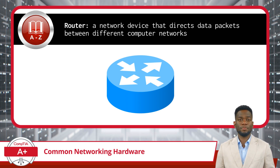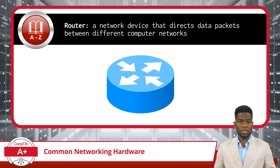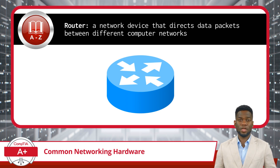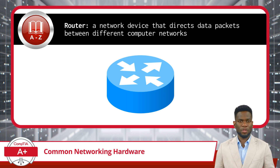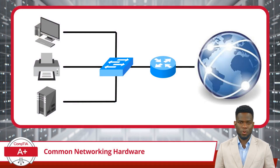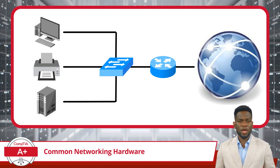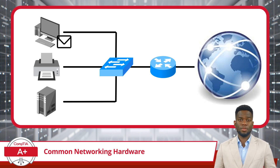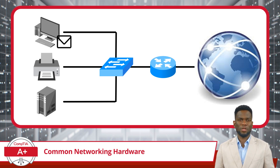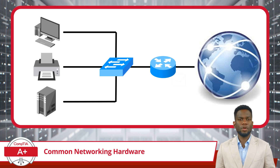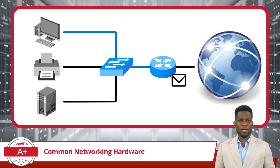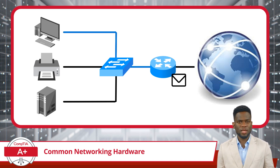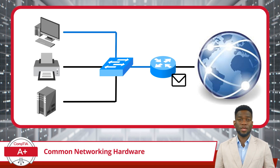We also have network routers. A network router is a network device that directs data packets between different computer networks. This is similar to a switch, with the exception that a switch directs traffic within a local area network, while a router controls data packets entering or leaving a local area network. When a device wants to send data to another device in a different network, it compiles a data packet containing a source IP address and a destination IP address. If the destination IP address is not located within the current network, the packet seeks out the router. The router examines the packet's destination address, much like reading a street sign, and determines the most efficient path for the data. In summary, a router is a gateway sitting at the edge of a network's broadcast domain, controlling inbound and outbound connectivity to other networks.